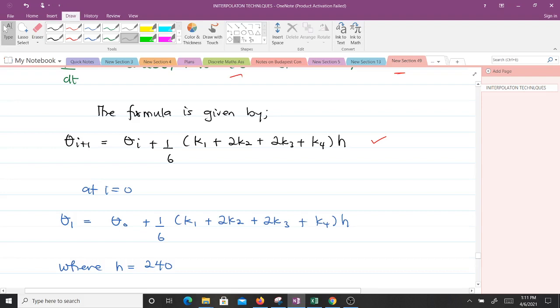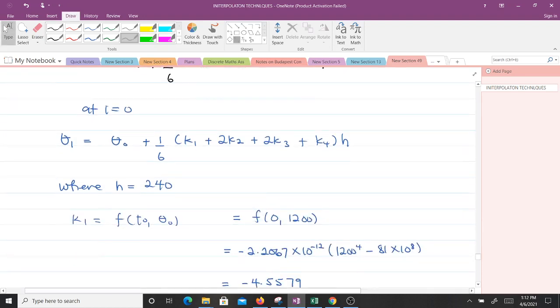That means we can go on to do the first iteration. The only thing for us to find is our K values because we know from the question we had theta of 0 equals 1200 Kelvin, so our theta naught is 1200 and our T naught is 0. To find our K1, K1 is given to be F of T naught, theta naught, which would be F of 0, 1200.